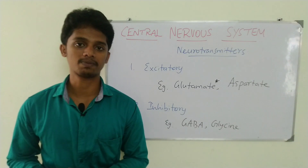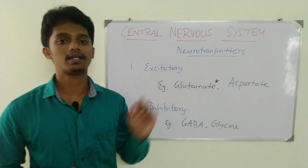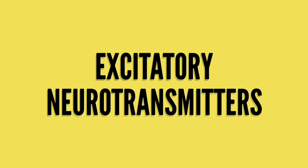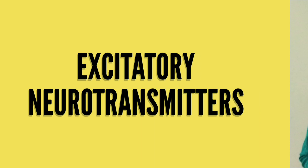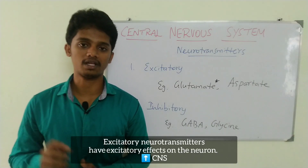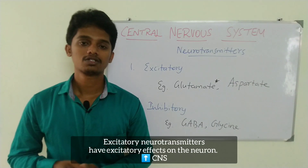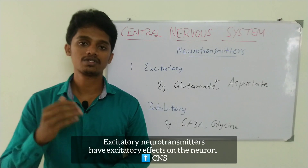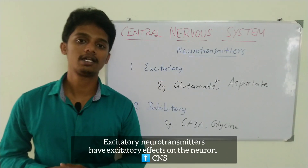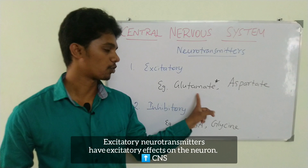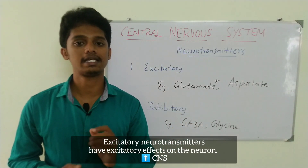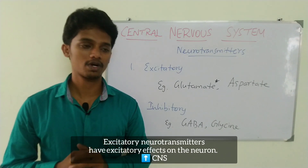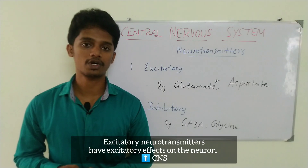There are two types of Neurotransmitters in the CNS. One is the Excitatory Neurotransmitter, and two is the Inhibitory Neurotransmitter. The Excitatory Neurotransmitter produces excitation or stimulation, which increases CNS activity. For example, Glutamate — it is the chief neurotransmitter in the CNS, present in 90% of CNS synapses.